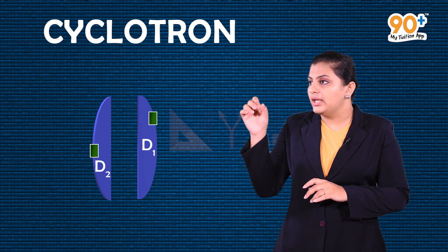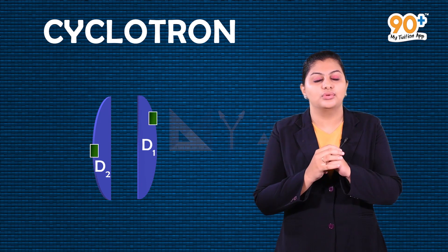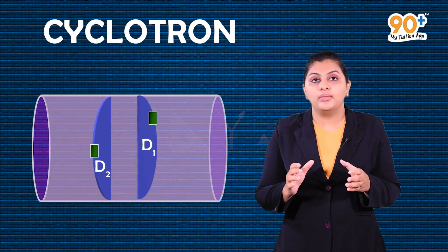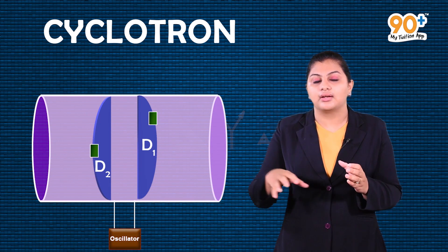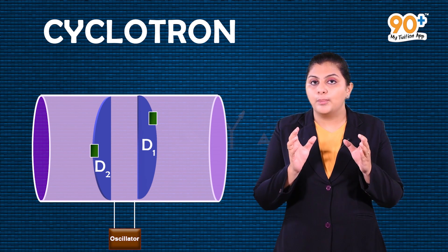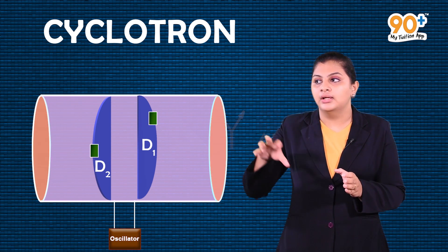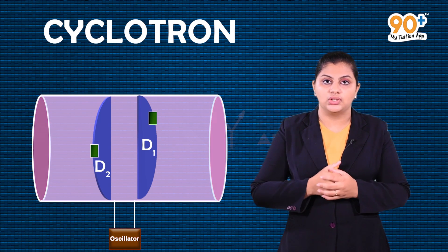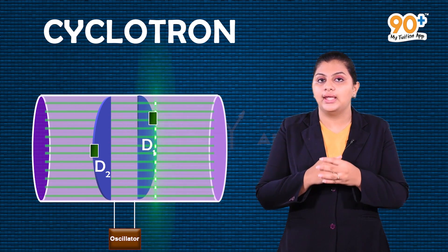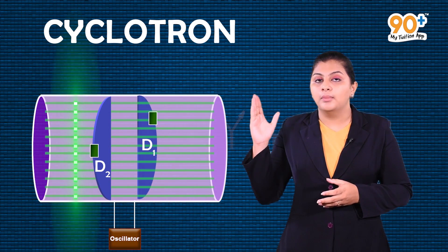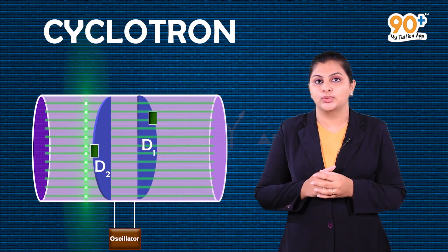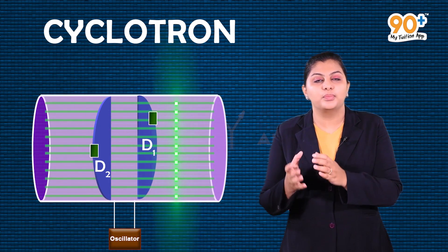This arrangement is enclosed in an evacuated metal container. The arrangement is placed between powerful electromagnetic pole pieces. As a result, a uniform magnetic field is perpendicular to this plane.